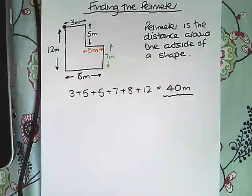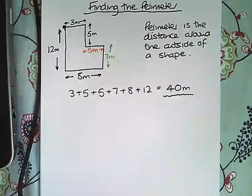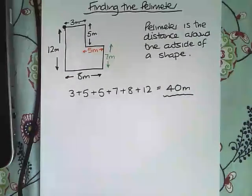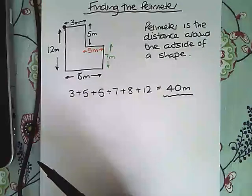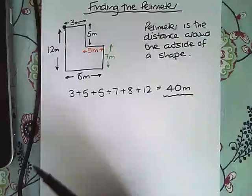So that is the perimeter of this L shape. Whenever you have a shape that has got some missing sides, you need to work out those before you even start the question. Thanks for watching.